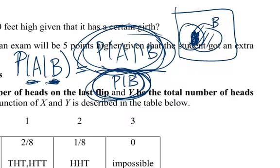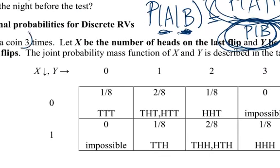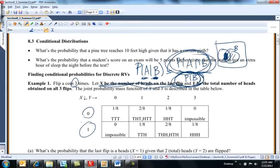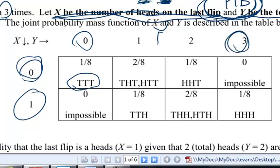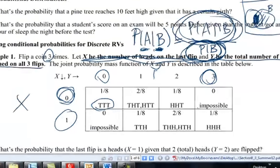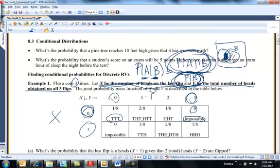Think of the intersection over the marginal — the joint divided by the marginal in terms of functions. I'm going to flip a coin three times. X is the number of heads on the last flip — you can only have zero or one head on the last flip. And Y is the total number of heads on all three flips. Here's the joint probability mass function. Zero, zero occurs 1/8 of the time — that's tail, tail, tail, no heads totally and no heads on the last toss.